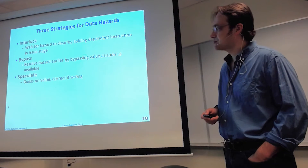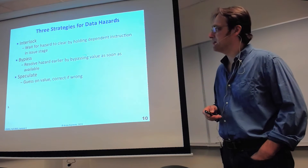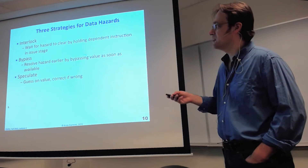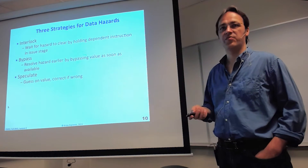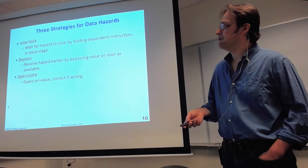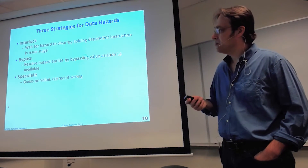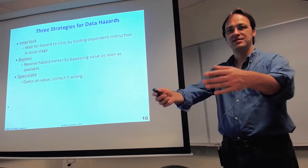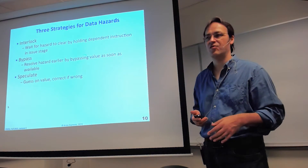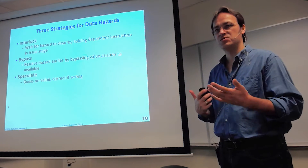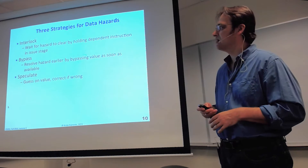There are three basic strategies for handling data hazards: interlock, bypass, and speculate. Interlocking just waits for the hazard to clear — this always works in a machine where older instructions have priority. All the hazards involve something that must happen after something else, so you simply wait until the prerequisite has happened. Read-after-write: wait until the write is done, then do the read. Write-after-write: wait until the first write is done, then do the second write. You can always handle these by interlocking at the issue stage.